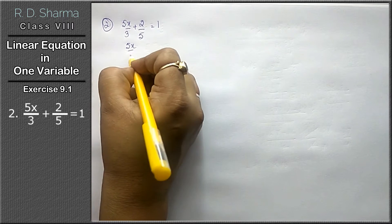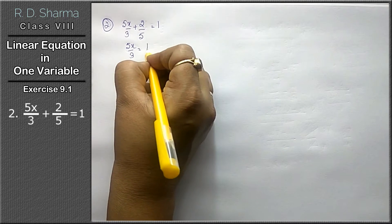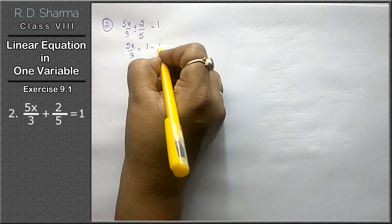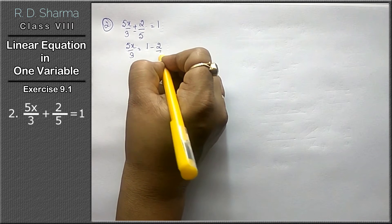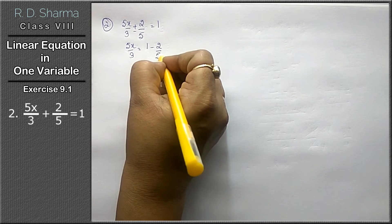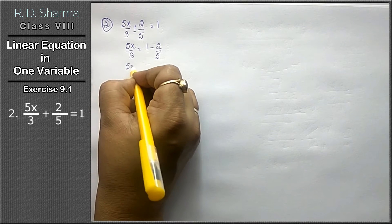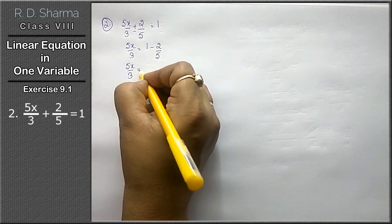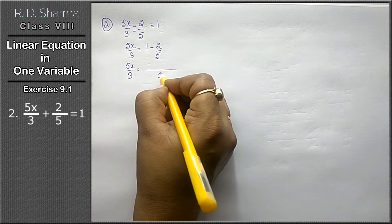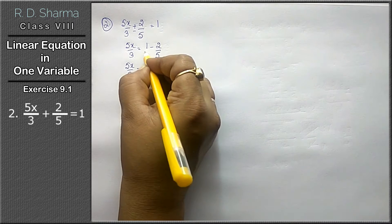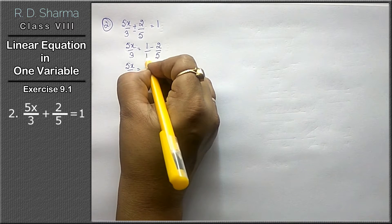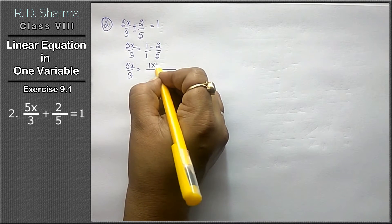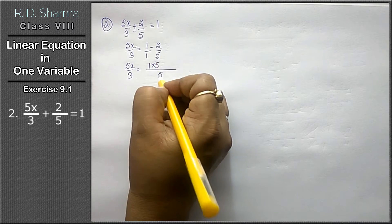The x terms stay on the left hand side; the rest goes to the right hand side. Since 2 upon 5 has a positive sign here, moving it over gives a minus sign. So we have 5x upon 3 equals to 1 minus 2 upon 5. Taking LCM as 5, we write 1 as 1.